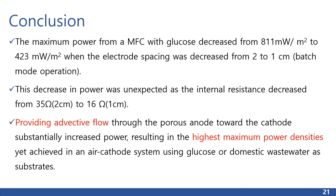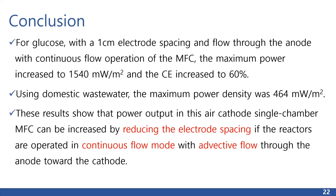Conclusion: the maximum power from a MFC with glucose decreased from 811 mW per meter square to 423 mW per meter square when the electrode spacing was decreased from 2 to 1 cm in batch mode operation. This decrease in power was unexpected as the internal resistance decreased from 35 ohm to 16 ohm. Providing advective flow through the porous anode toward the cathode substantially increased power, resulting in the highest maximum power densities yet achieved in an air cathode system using glucose or domestic wastewater as substrates. For glucose with 1 cm electrode spacing and flow through the anode in continuous flow operation, the maximum power increased to 1,540 mW per meter square and CE increased to 60%. Using domestic wastewater, the maximum power density was 464 mW per meter square. These results show that power output in this air cathode single chamber MFC can be increased by reducing electrode spacing if the reactors are operated in continuous flow mode with advective flow through the anode toward the cathode.